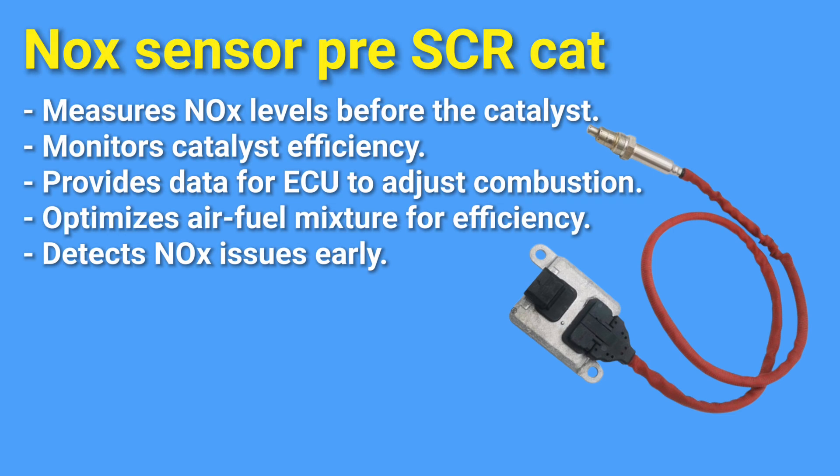The sensor contains two chambers. The first adjusts oxygen concentration using a pump cell that directs ions through the electrolyte. Nitrogen oxide then moves to the second chamber, where it's further reduced by another pump cell. A catalytic element in the third pump cell converts the remaining nitrogen oxide into nitrogen and oxygen, creating a current proportional to the nitrogen oxide levels. The rear NOx sensor checks the efficiency of the AdBlue system by comparing its readings with those from the front NOx sensor, communicating with the DDE via a local operating network (LOCAN) for real-time monitoring.